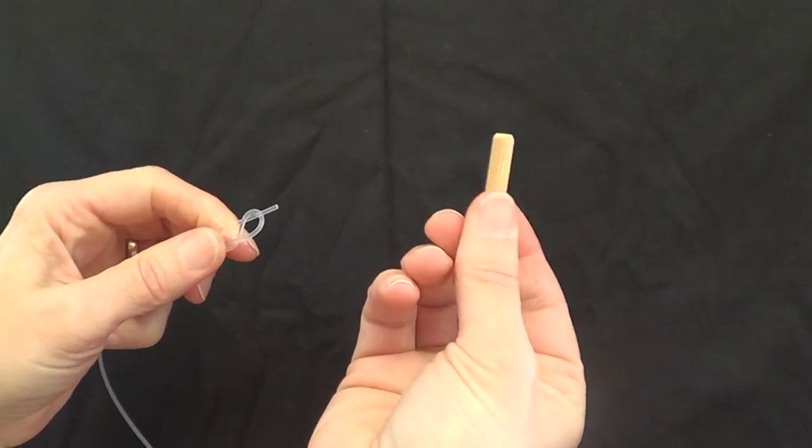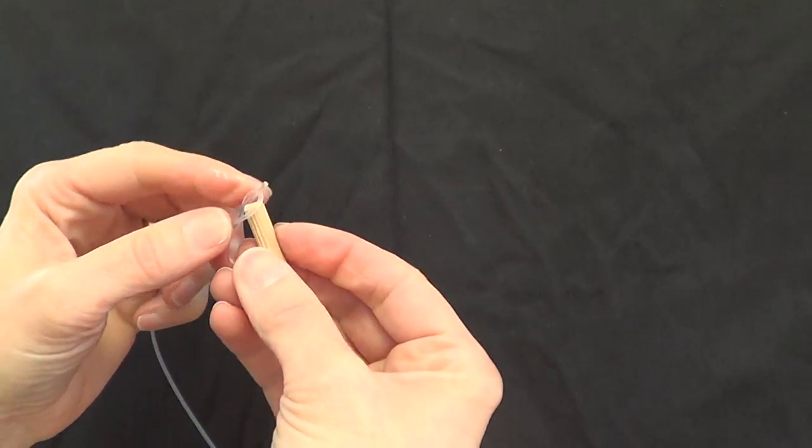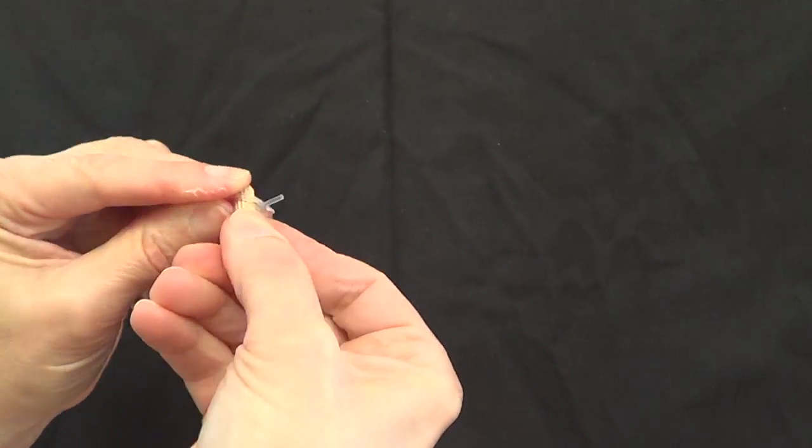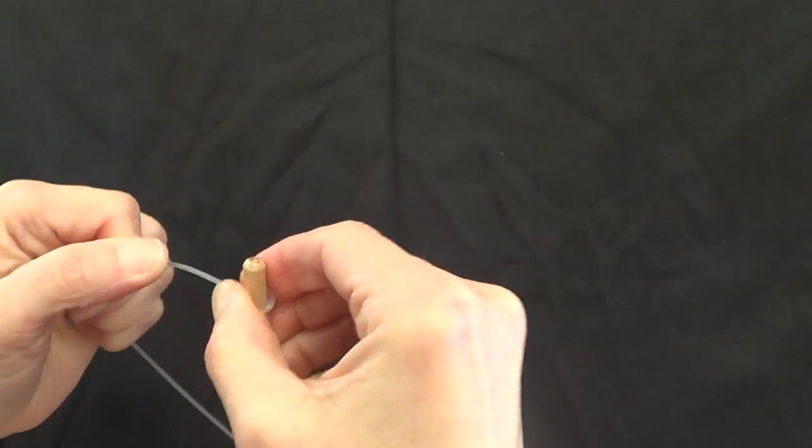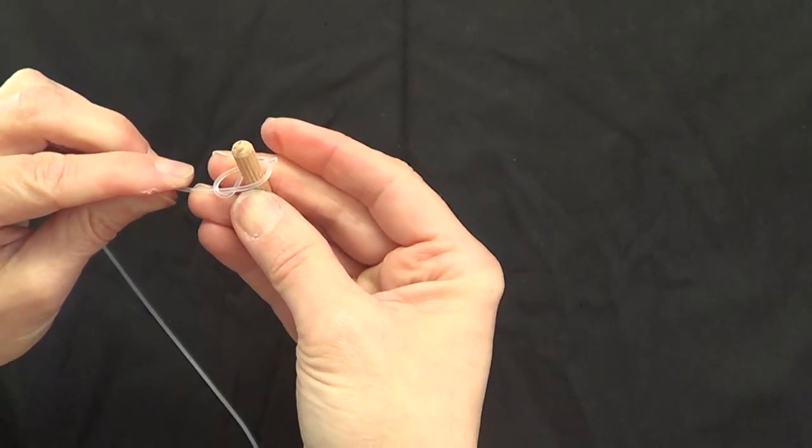And then I've got my little dowel that Cammack uses for string anchors. Poke that business through, and pull it tight. And you're ready to go.